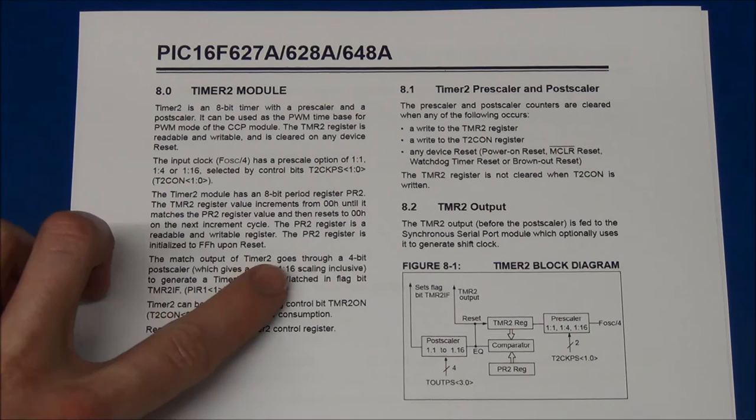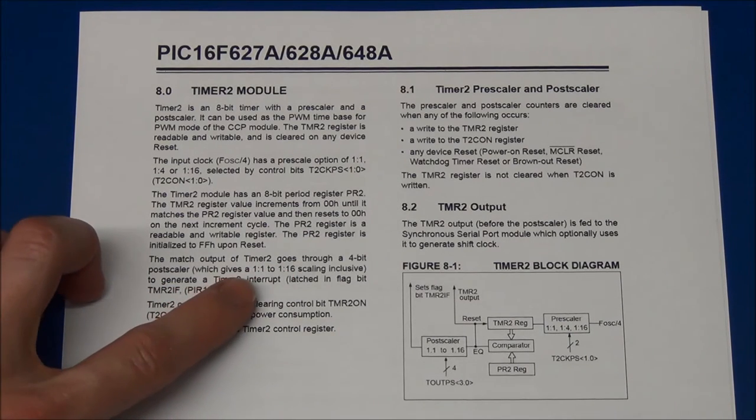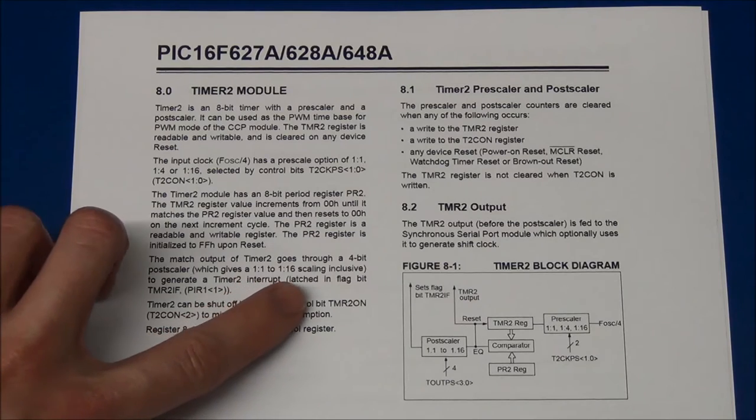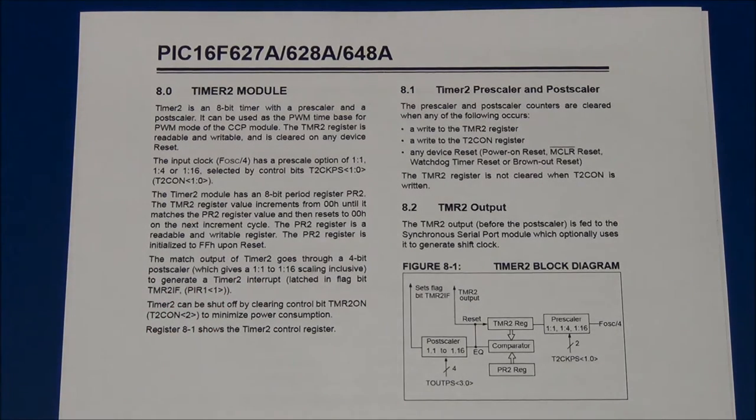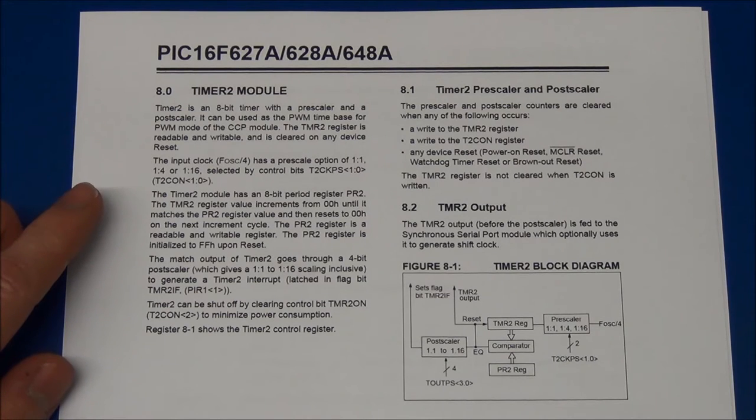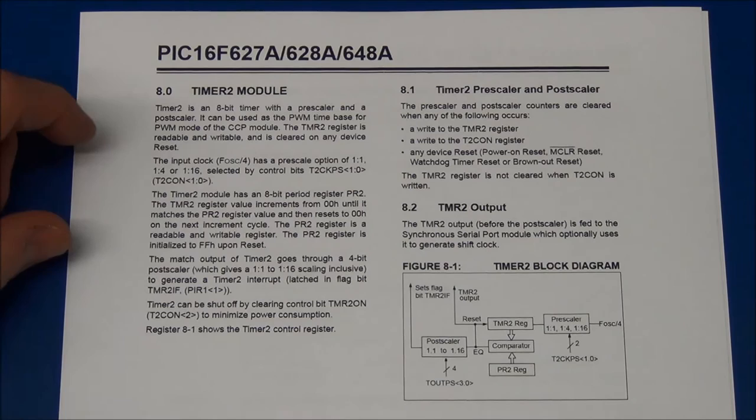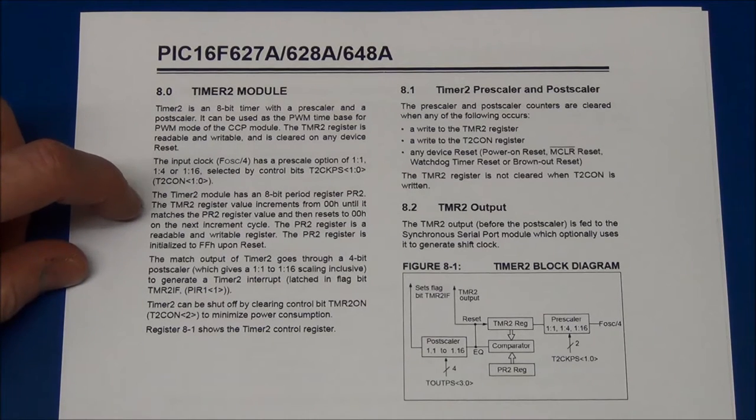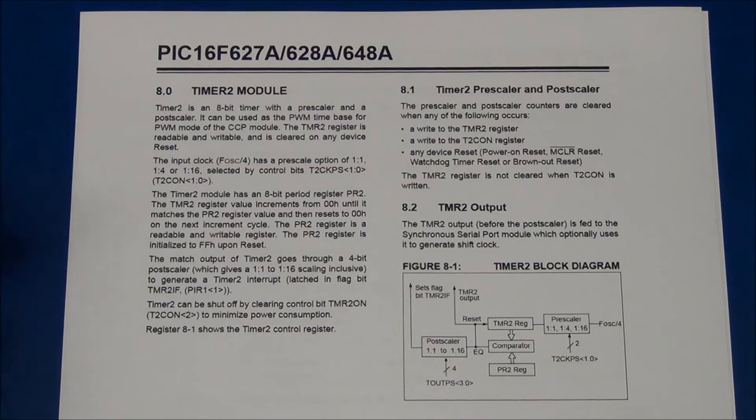The match output of the timer 2 goes through a 4-bit post-scaler which gives a 1 to 1 to 1 to 16 scaling to generate a timer 2 interrupt. So what this basically means is we have a hell of a lot of different options to divide the main clock frequency down to get a timer increment that we can use for whatever we want.